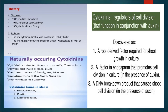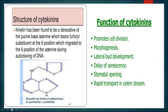The cytokinins found in plants belong to categories such as zeatin, dihydrozeatin, and ribosylzeatin. They are known as growth regulators because their most important function is to enhance the process of cell division, and hence they are utilized in the process of tissue culture along with auxin. A root-derived factor is required for shoot growth in culture, and there is a factor in endosperm that promotes cell division in culture.